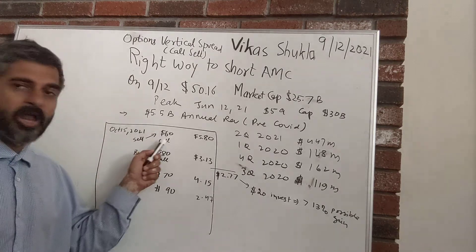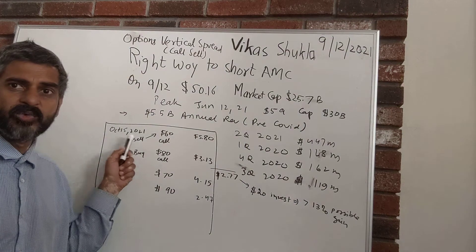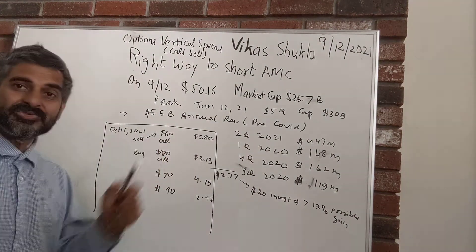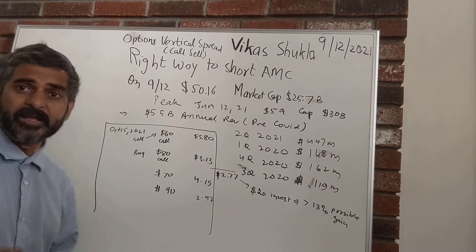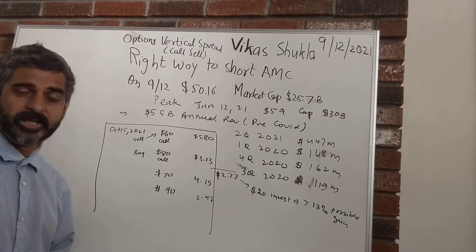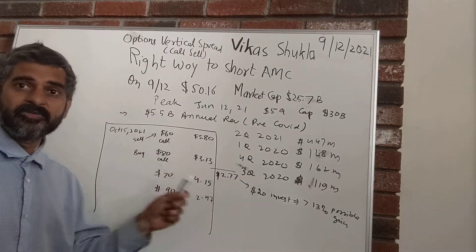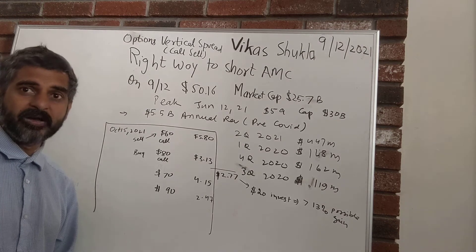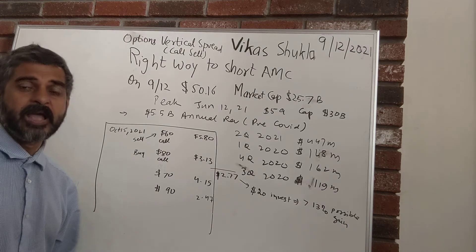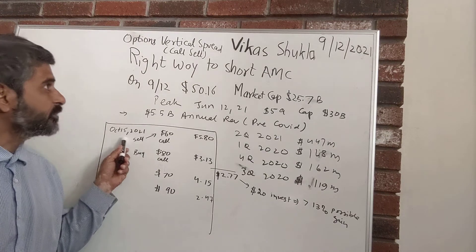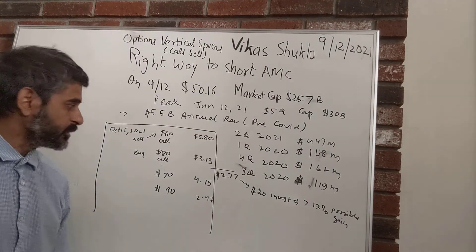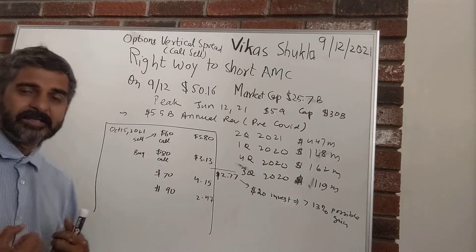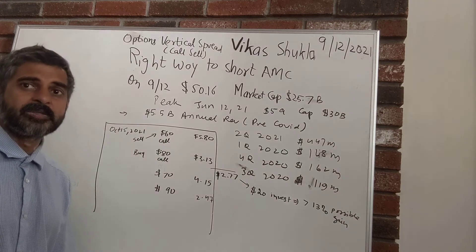What I do is sell this $60 call option expiring October 15, 2021. That means if the stock price stays below $60 by October 15 — which is what I'm thinking, that it may go a little higher but not beyond $60 — then I make $5.80. Since one option covers 100 shares, I will be making $580. In about one month from today, September 12th, I'm going to make $580 just by selling the call and collecting that cash.